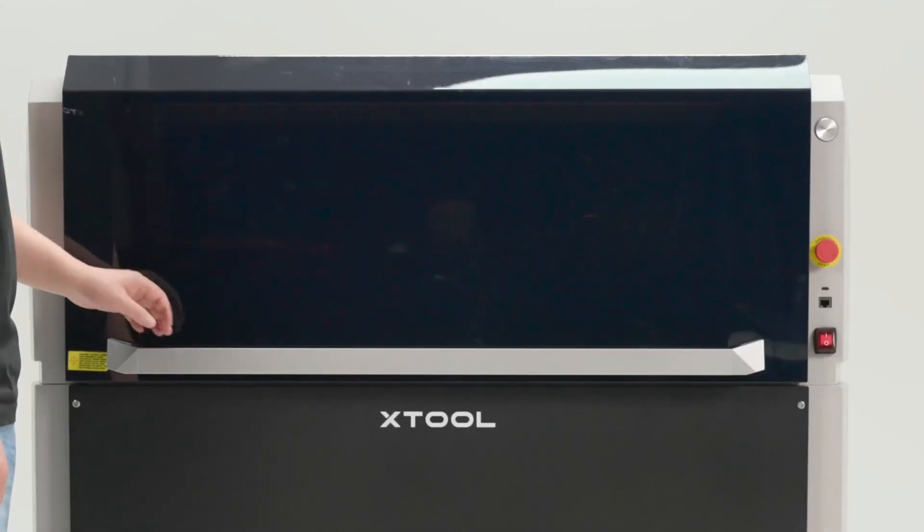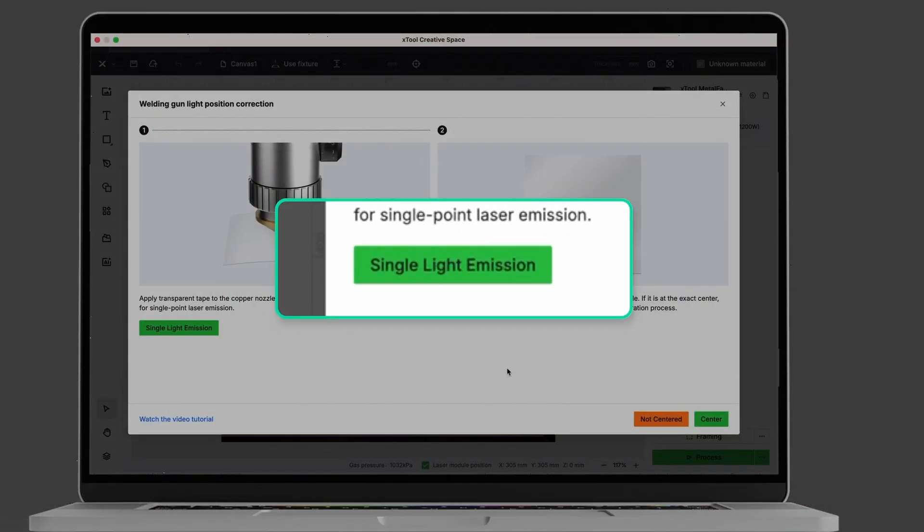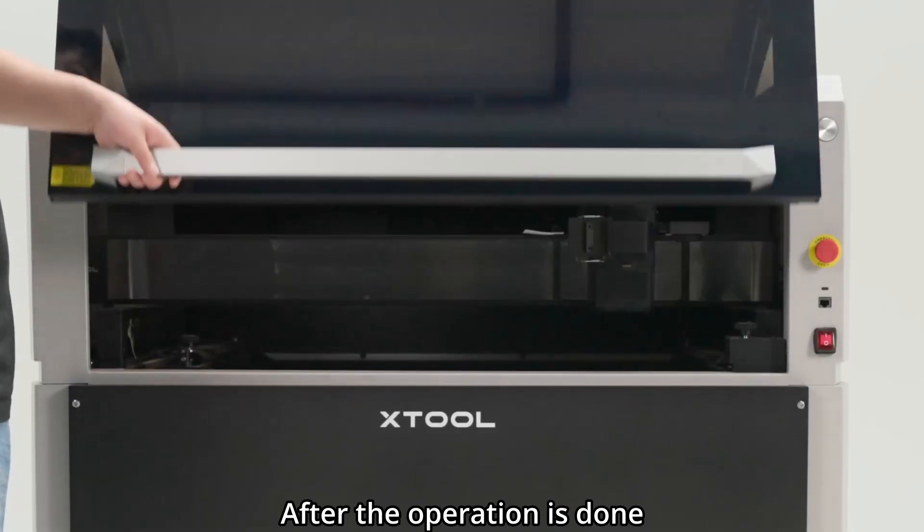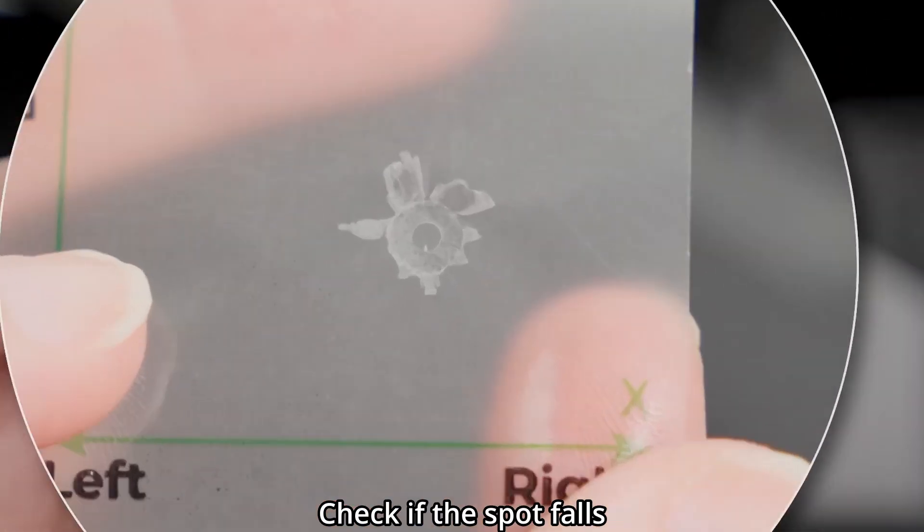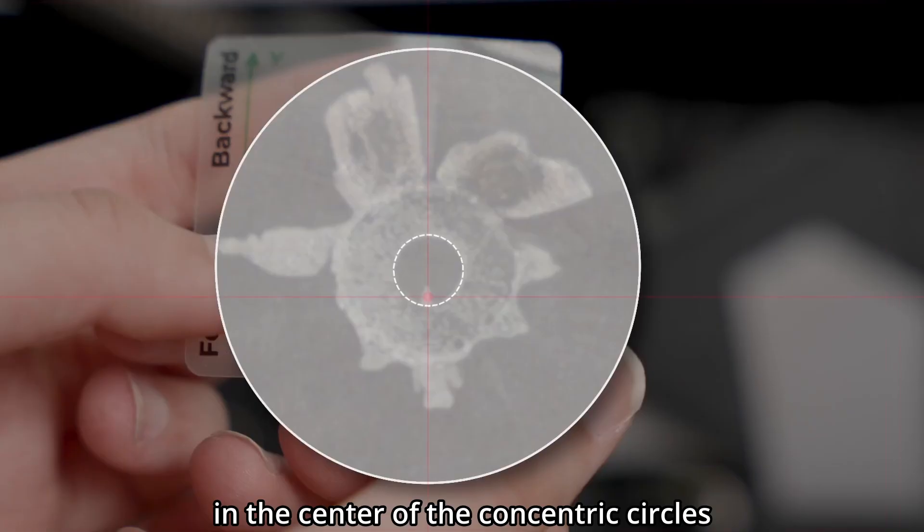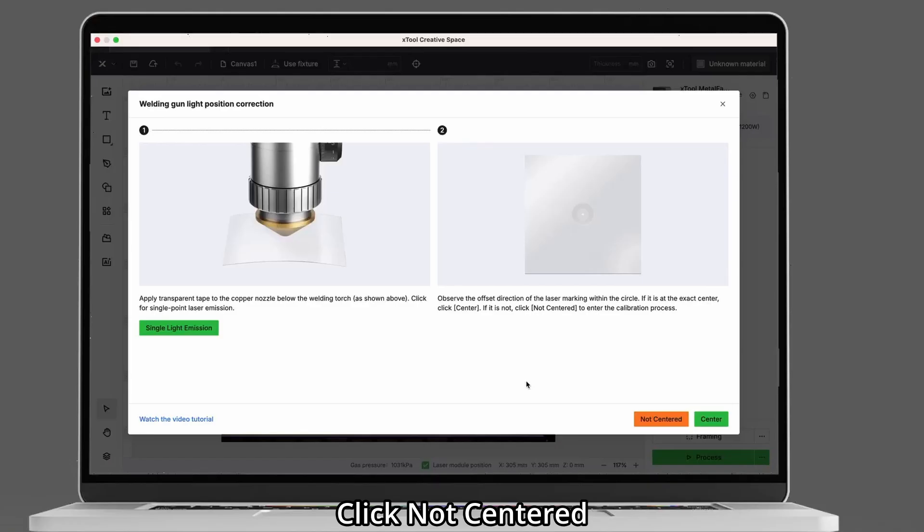Close the lid, click Single Light Emission. After the operation is done, open the lid and take out the sticker, check if the spot falls in the center of the concentric circles.